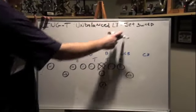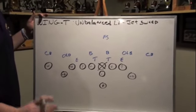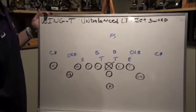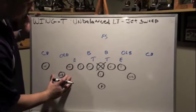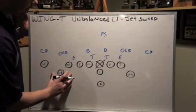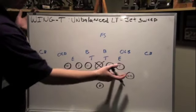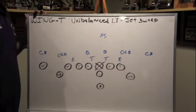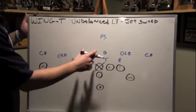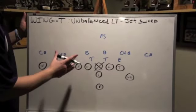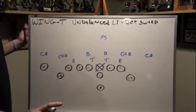This is unbalanced left jet sweep out of our Wing T formation. This is a play I've run for years on the youth football level and I've had a tremendous amount of success with it. Unbalanced means there's more blockers to one side — we have five blockers to the left versus three on the right. A lot of times defenses and defensive coordinators do not even notice that we're tilted, which is another word for unbalanced, to one side, so we get really great blocking angles.